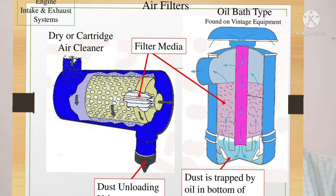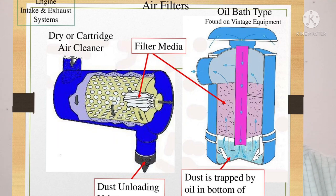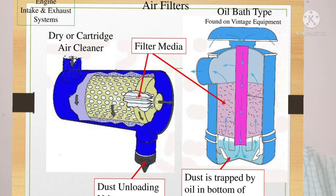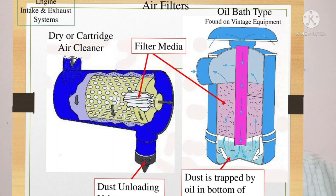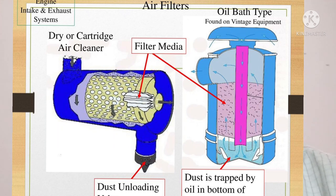In the oil bath type air cleaner, shown on the right side, air first comes in through the air cleaner housing hood. When the air enters the oil bath type air cleaner, it touches the lube oil which is filled in the oil chamber of the housing. The maximum sediment, when it touches the oil, settles down at the sump. After that, the air passes through the wire mesh and goes to the combustion chamber.